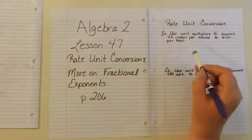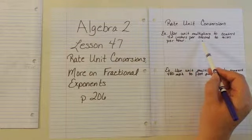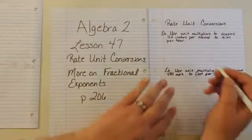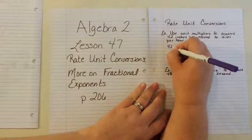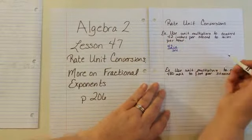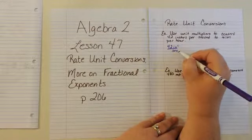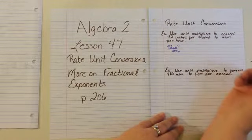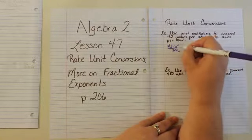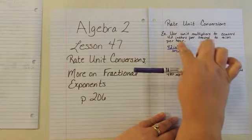For example, we're going to use unit multipliers to convert 42 inches per second to miles per hour. If we have 42 inches per second, we can choose whether we want to work on the distance or the time first. Let's do the time first this time, so we're going to convert seconds to hours.